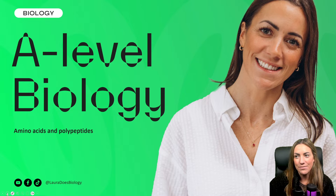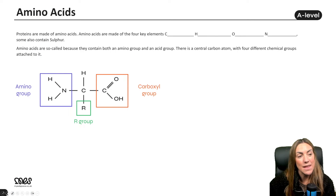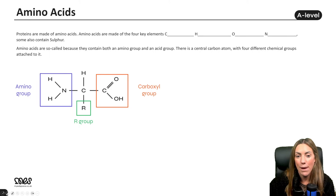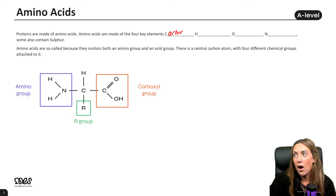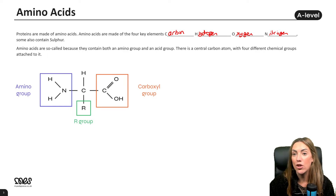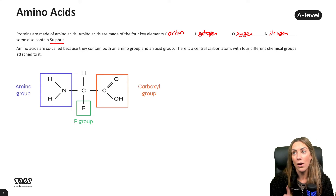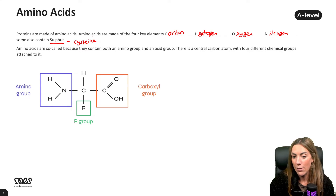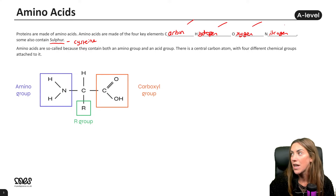Firstly, amino acids — they are the components of proteins. The amino acid is the monomer that makes up a protein or a polypeptide, which is the polymer. Amino acids are made from four key elements: carbon, hydrogen, oxygen, and nitrogen. Nitrogen is one element not found in carbohydrates or lipids. Some amino acids also contain sulfur, but only one — cysteine. So if asked to name the elements found in all amino acids, the answer is carbon, hydrogen, oxygen, and nitrogen.